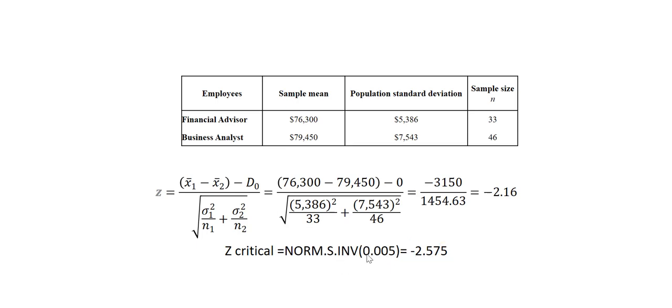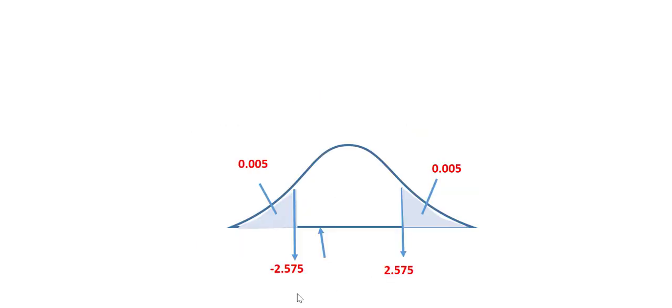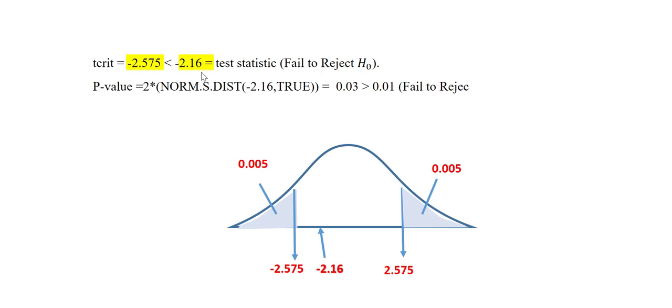This value can also be obtained by using the standard normal table. As a result of that, we see in this standard normal curve, the area on either tail is alpha over 2, which is 0.005, and the respective critical value, 2.575 on the right tail, and negative 2.575 on the left tail. The test statistic falls outside the rejection region since the critical value is less than the test statistic. So we fail to reject the null hypothesis.